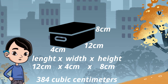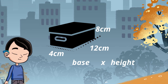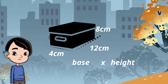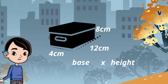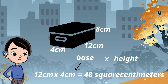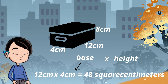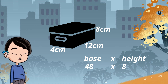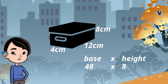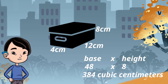Another way to find volume is by multiplying the base by the height. The base is 48 square centimeters, because 12 centimeters times 4 centimeters equals 48 square centimeters. Base times height is 48 times 8, which is 384 cubic centimeters.